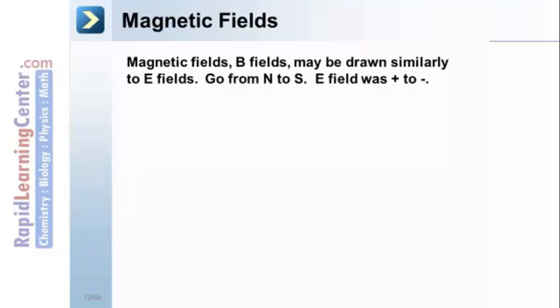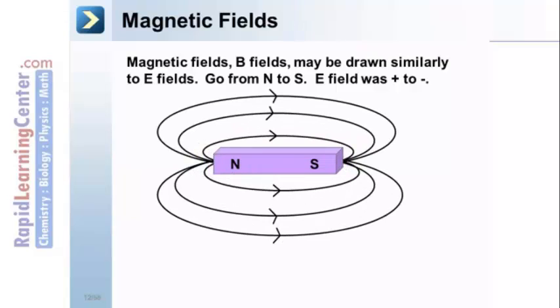The electric field moved from plus to negative. So here's our magnet. The magnetic field would be drawn something like this. Notice the lines have arrows, which point from north to south.